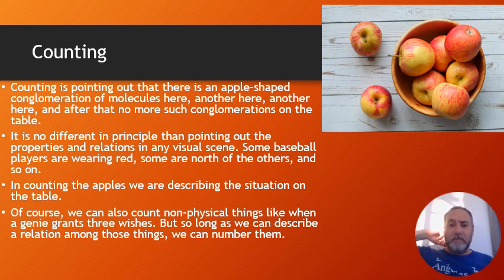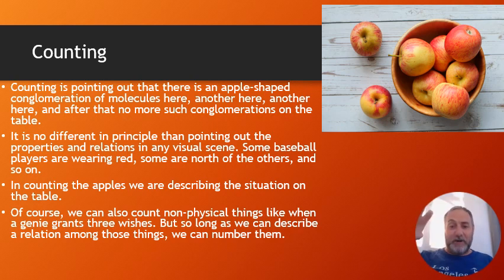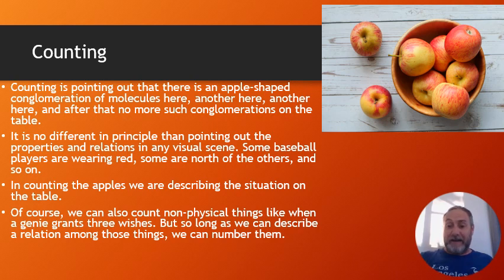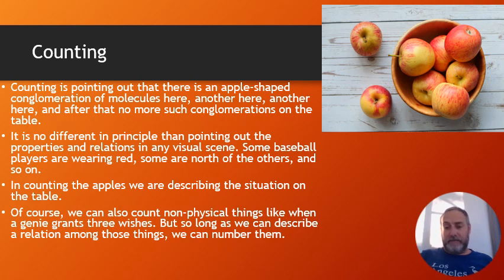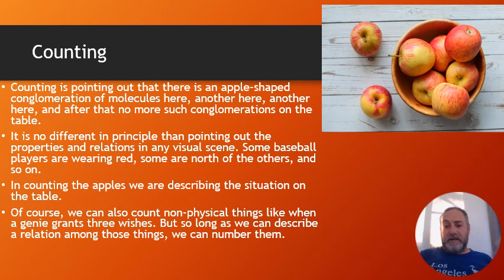So what are we doing when we're counting or numbering? She says we're pointing out, for example when counting apples on a table, that there is an apple-shaped conglomeration of molecules here, and another such conglomeration here, and another one here, and after that there aren't any more such conglomerations on the table. So from counting three apples, that's basically what I'm doing. It's really in principle no different from pointing out properties and relations we do all the time in a visual scene — that baseball player is wearing red, that object is north of another object.